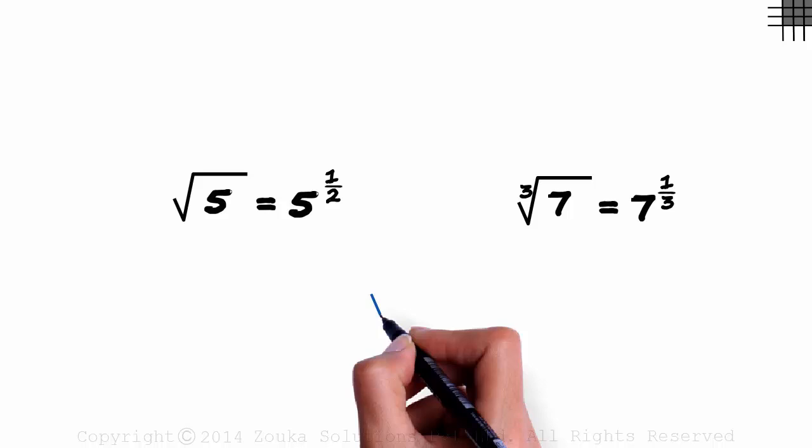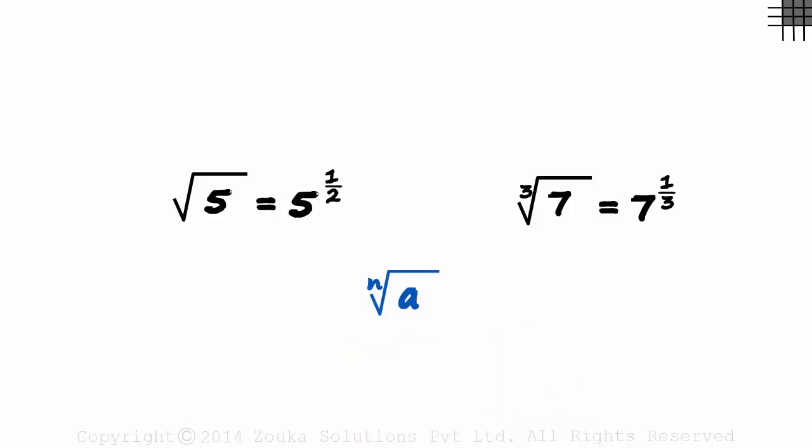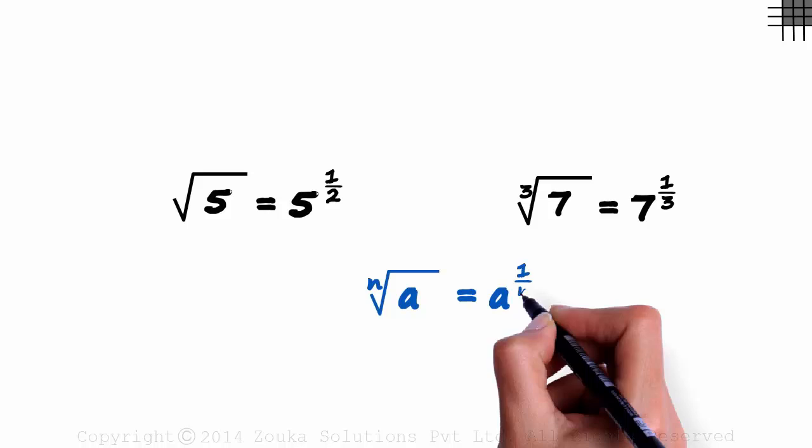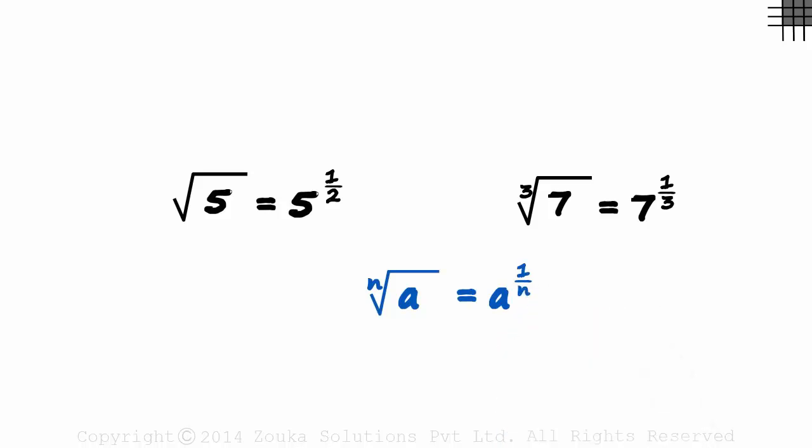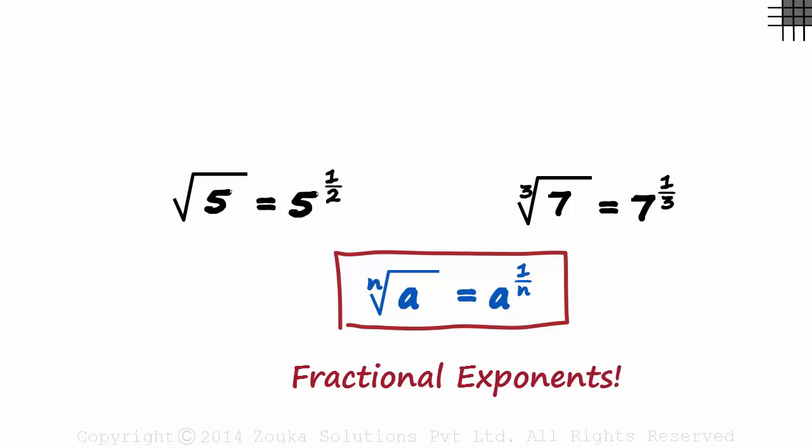If we have something like the nth root of A, it can be written as A raised to 1 by N. This is a very important concept you need to understand in order to solve fractional exponents problems. The nth root of A is equal to A raised to 1 by N.